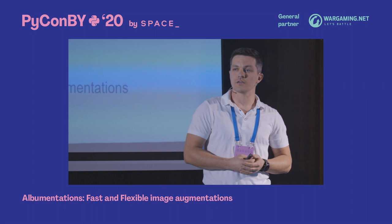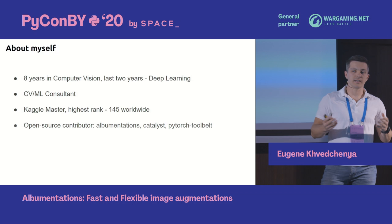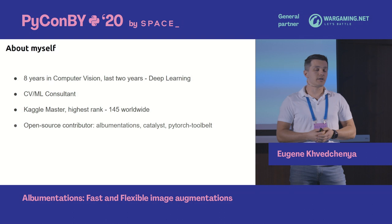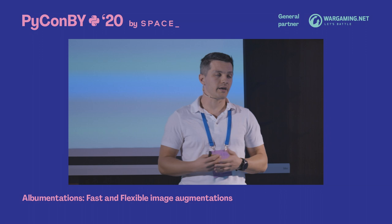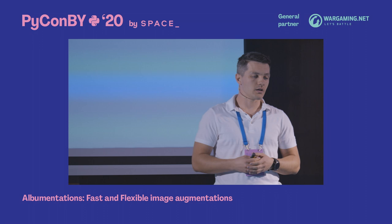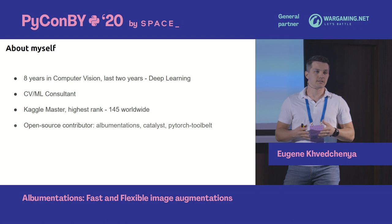I'm here to speak on Albumentations, the library that offers fast and flexible image augmentations to empower your training pipelines. I work with computer vision for almost eight years, starting with classical computer vision in C++ then switching to Python and deep learning. I work as a consultant, solve Kaggle competitions — currently a Kaggle master with a 145 worldwide rating — and contribute to open source projects like Albumentations, Catalyst, and PyTorch tool belt.